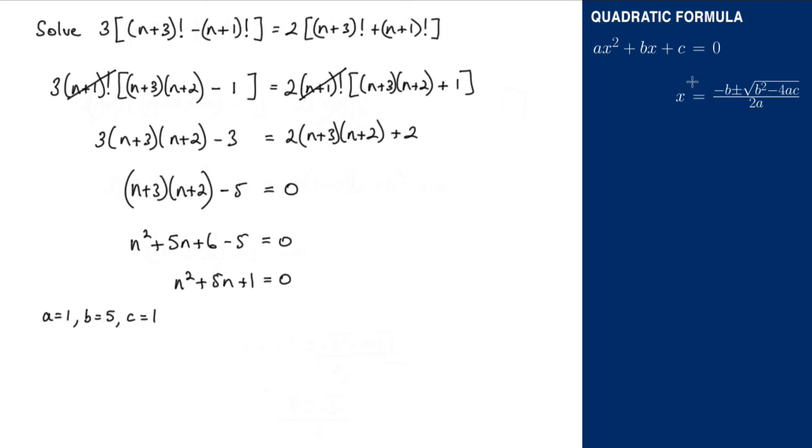Applying that into the quadratic formula, we'll have that n equals negative b, so that's negative 5, plus or minus the square root of b squared, which is 5 squared, minus 4 multiplied by a, which is 1, multiplied by c, which is 1. And that is all over 2 multiplied by a, which is going to be 2.